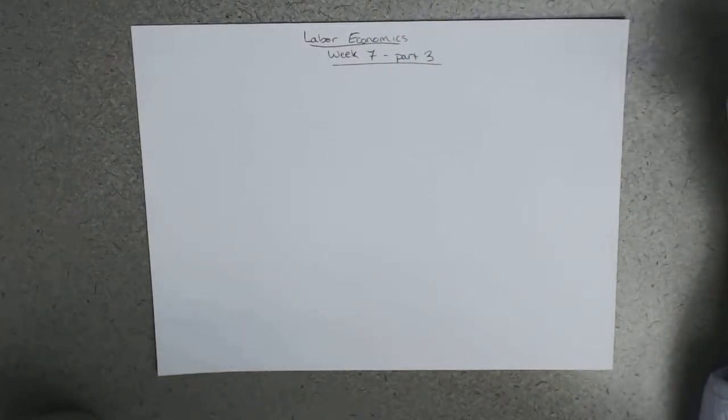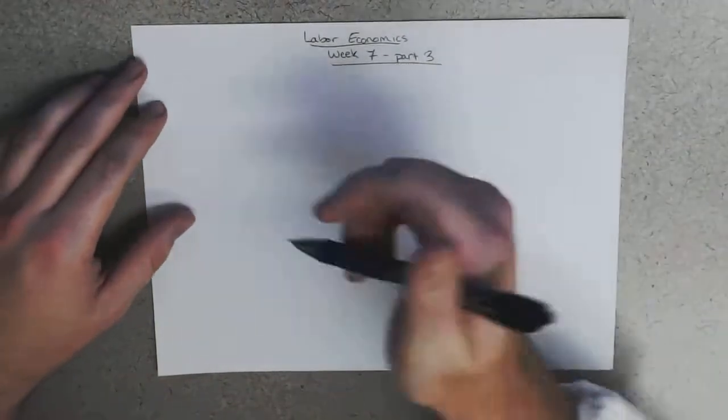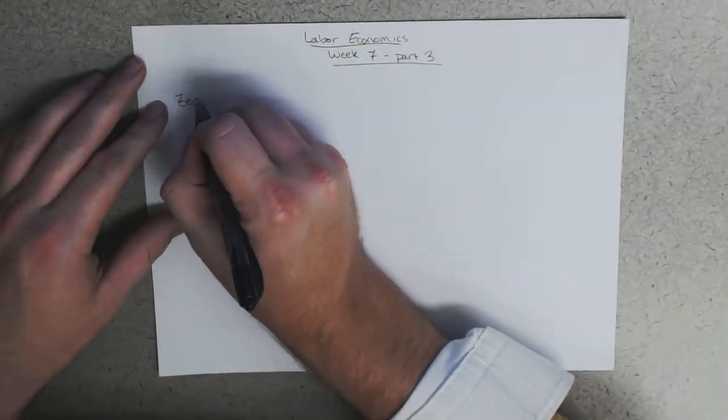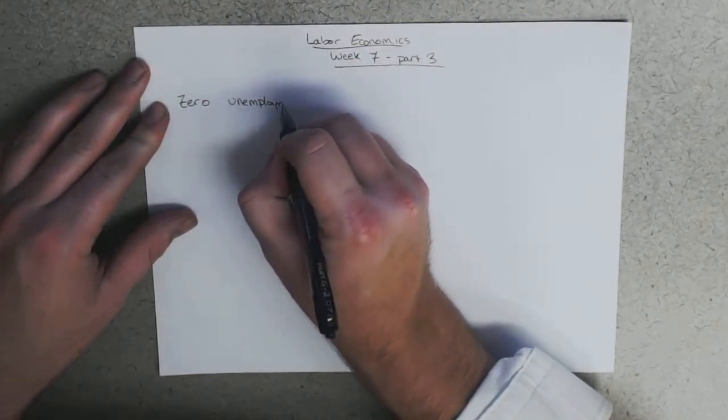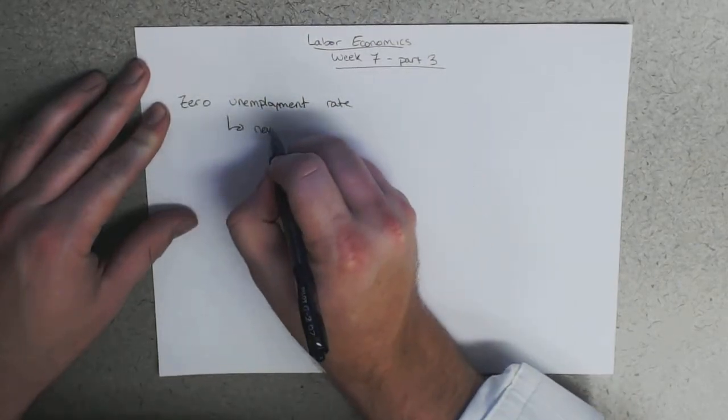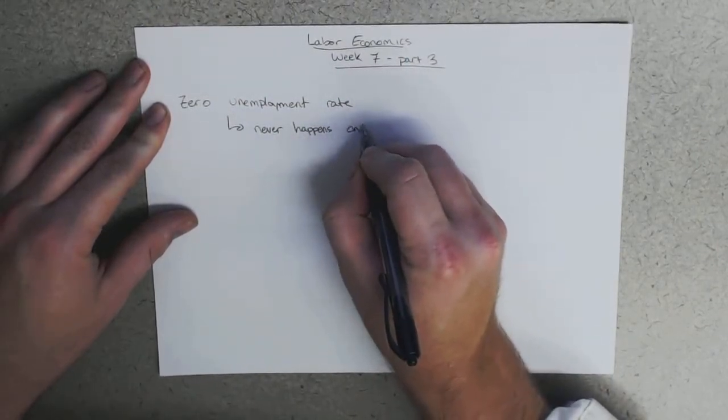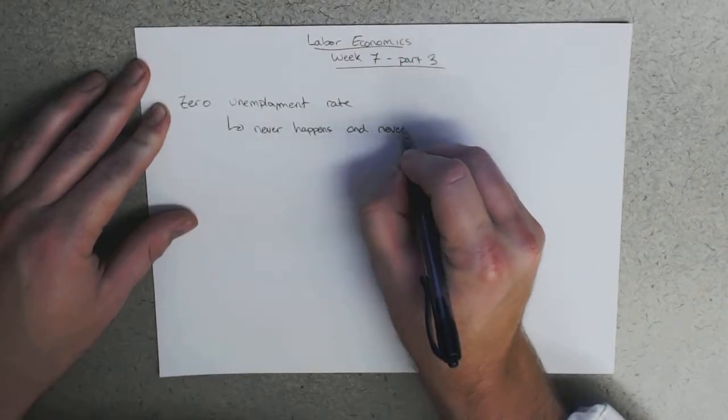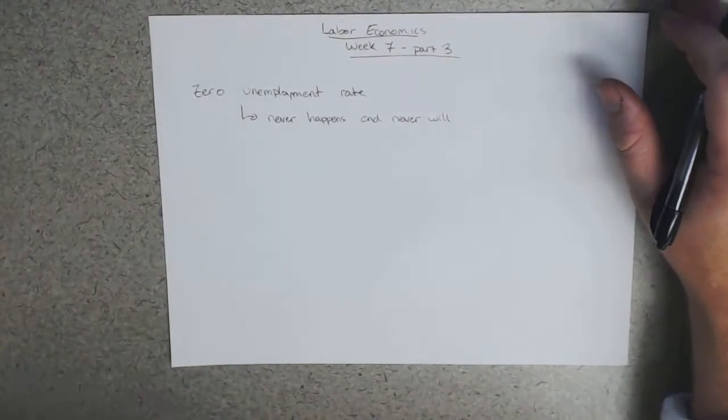Okay, so the last part of this week's material is actually a fairly simple point. The last point is that we're never going to have zero percent unemployment, zero unemployment rate. This never happens and it never will.